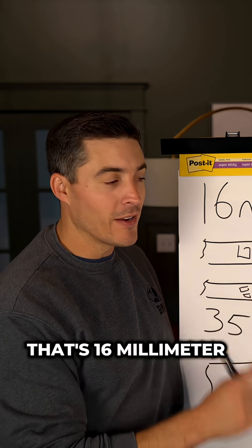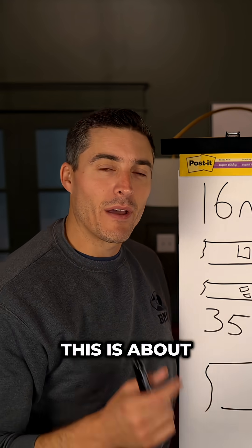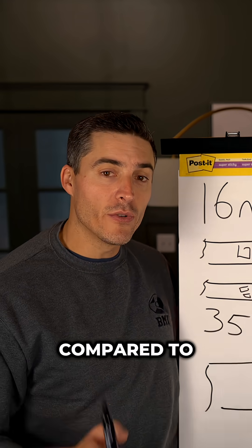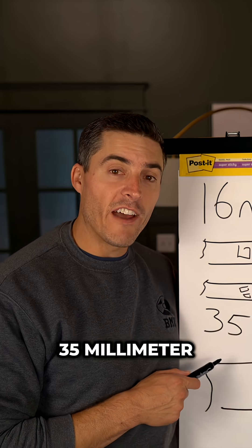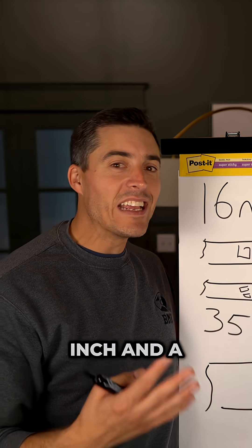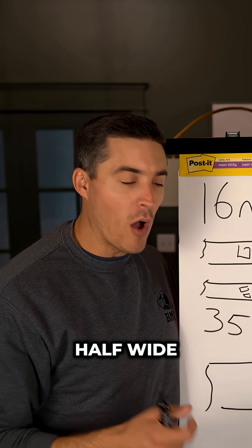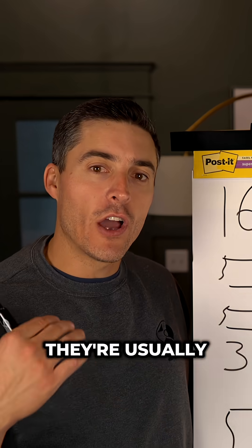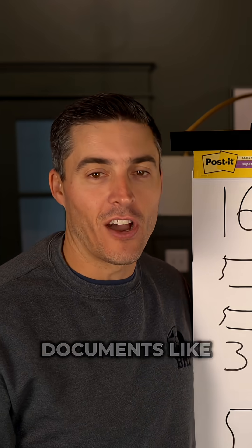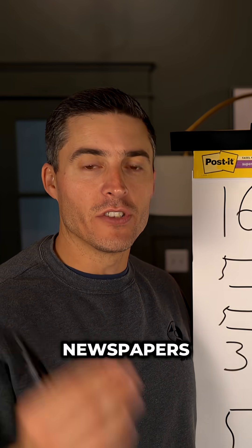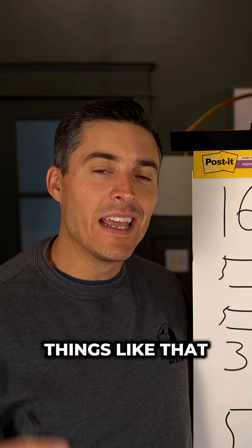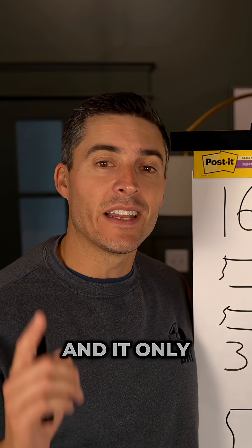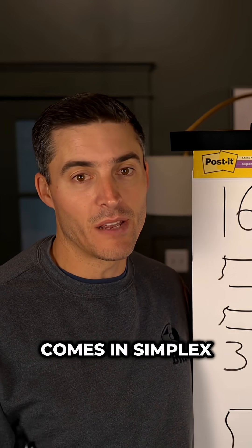The size of 16 millimeter is about three quarters of an inch, compared to 35 millimeter which is going to be about an inch and a half wide — a wider film strip. With 35 millimeter, there are usually oversized documents like newspapers, engineering drawings, books, things like that. It only comes in 100 foot length and it only comes in simplex.